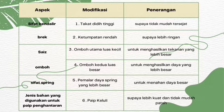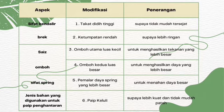Seterusnya, pengubahsuaian yang dibuat adalah berdasarkan aspek sifat spring. Pemalar daya spring haruslah yang lebih besar, kerana pemalar daya spring yang lebih besar adalah lebih keras berbanding pemalar daya spring yang kecil. Oleh itu, pemalar daya spring yang lebih besar dapat menahan daya besar yang akan dihasilkan.